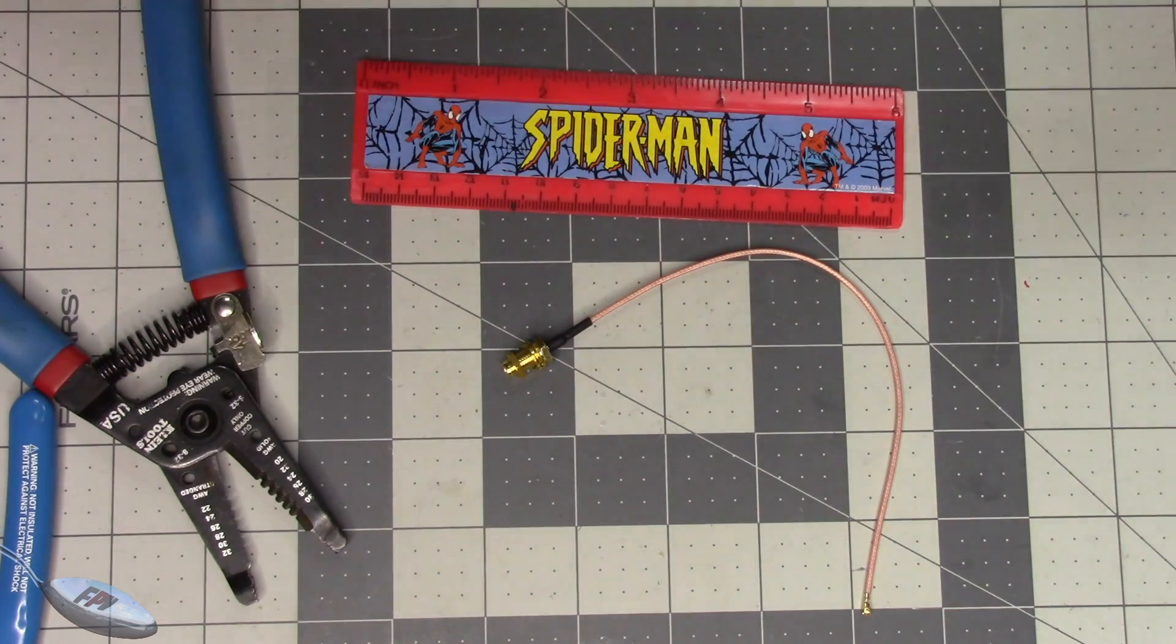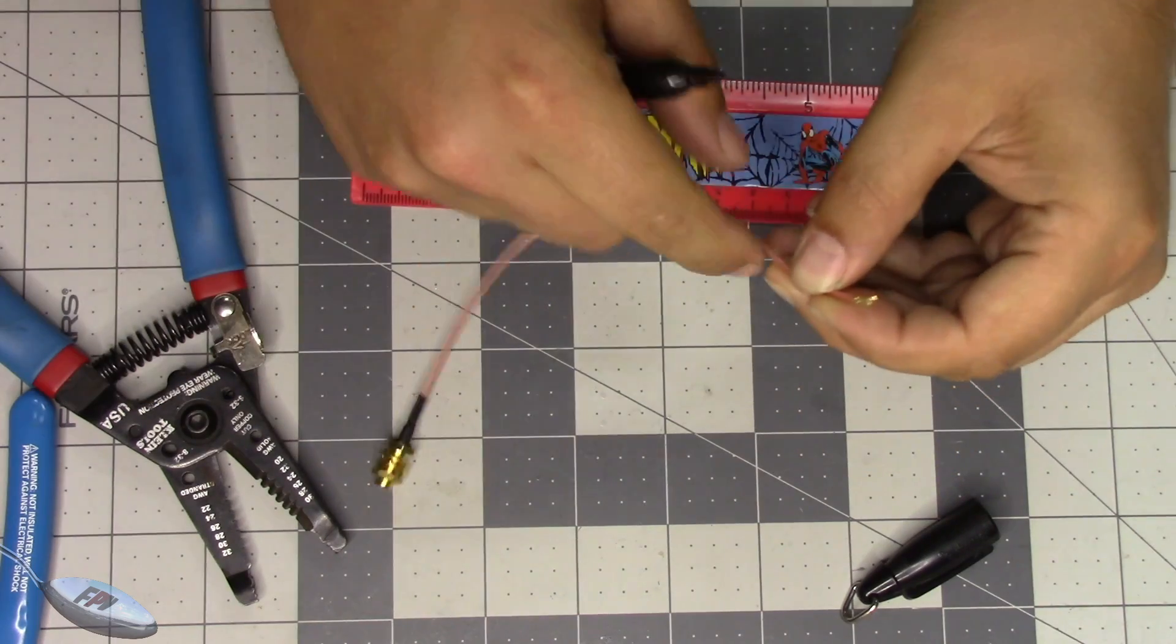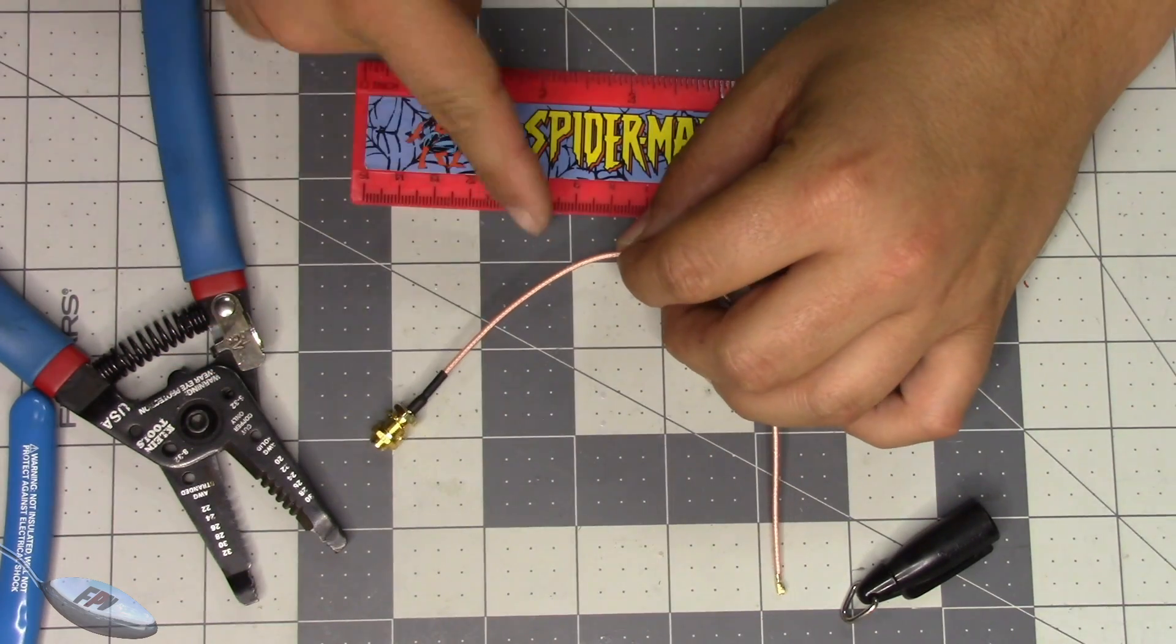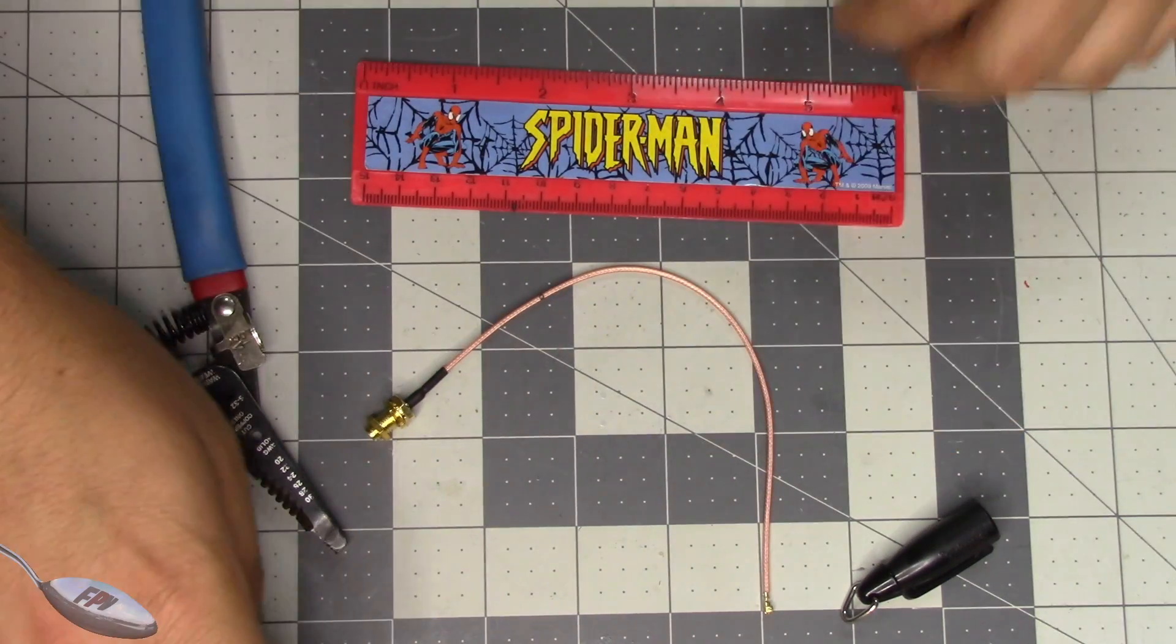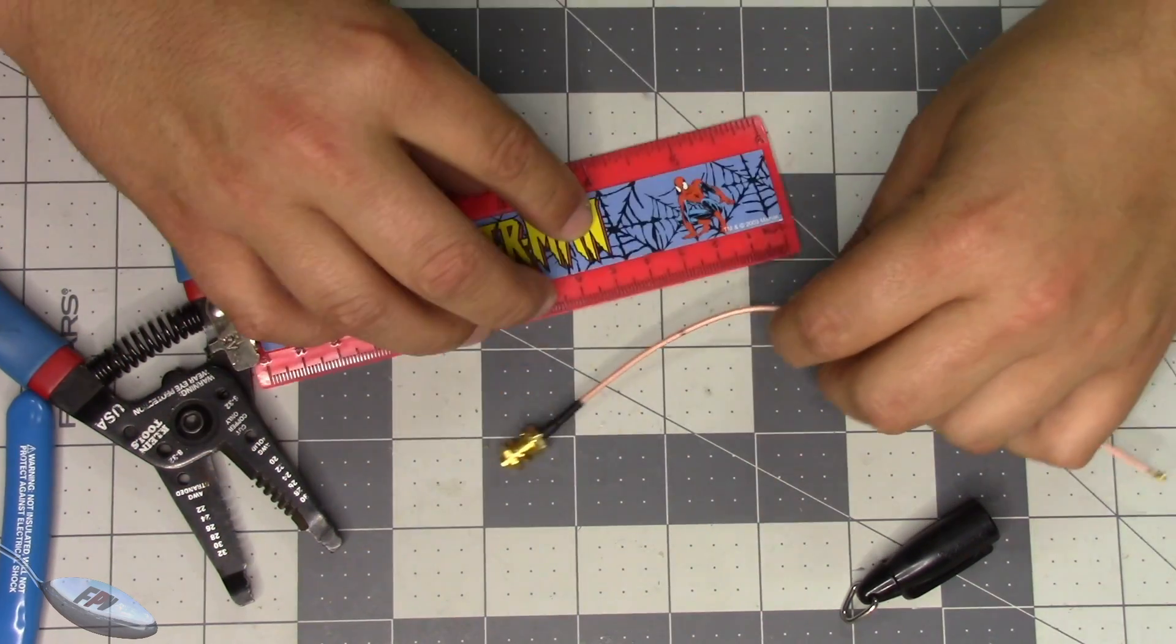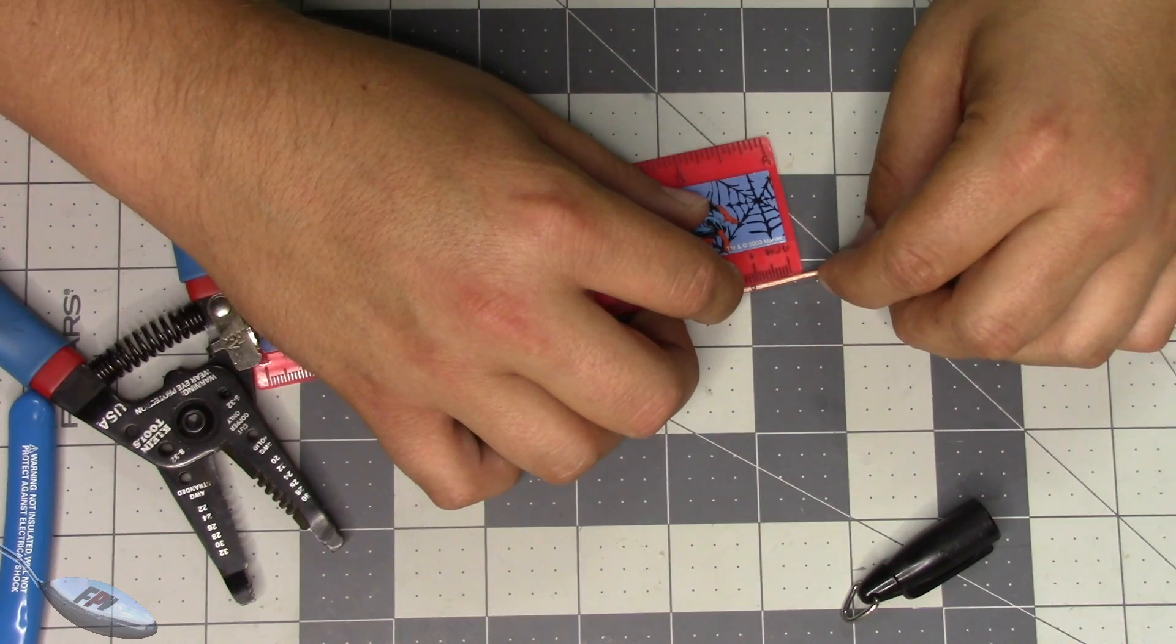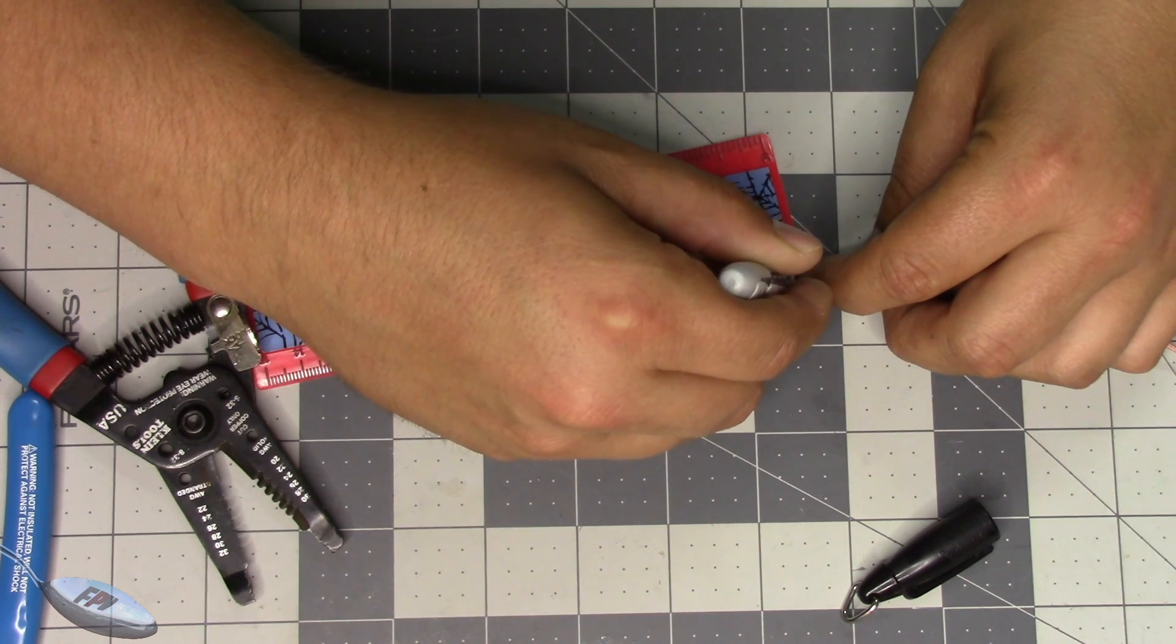But anyway, so measure out, plug this into your VTX, measure out where you want your antenna to be on your UFL. And then, so let's say I want the end of my antenna to be here, right? So I'll mark that and then I'll measure back my 13 millimeters basically, 12.92 millimeters. So that is about 12.92 millimeters.